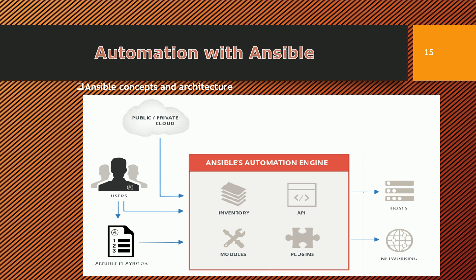The Ansible automation engine consists of various components. Inventories are the list of hosts or nodes along with their IP addresses — basically the servers you are going to control from your Ansible server. You have to maintain an inventory file in which you keep the IP addresses or names of your managed hosts.